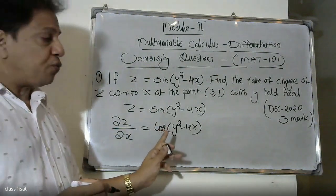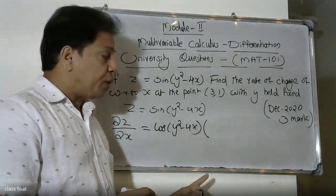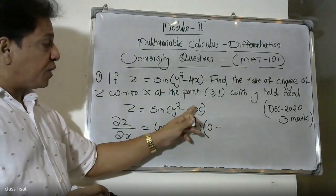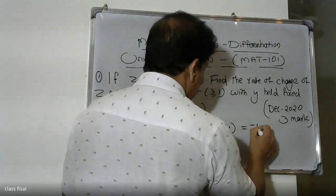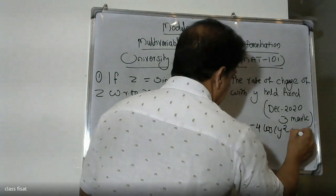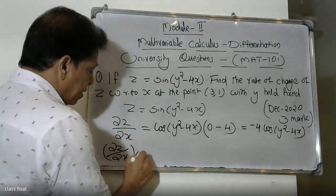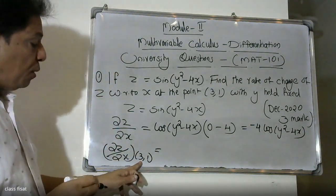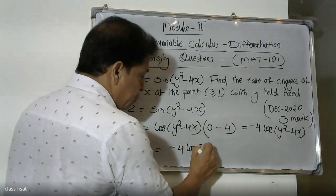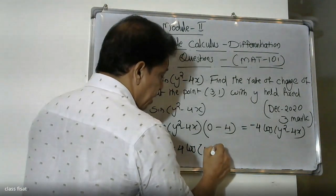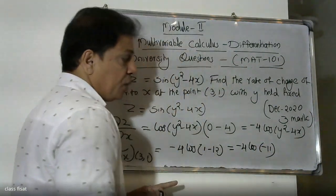Cos(y-squared minus 4x), multiplied by the derivative of the inner function. With y held constant, y-squared differentiates to zero, and minus 4x differentiates to give coefficient minus 4. So we get minus 4 cos(y-squared minus 4x).